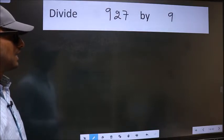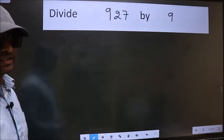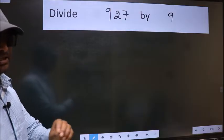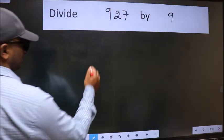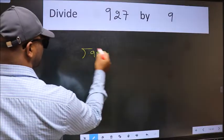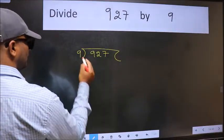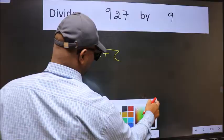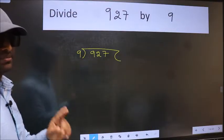Divide 9.27 by 9. To do this division, we should frame it in this way. 9.27 here and 9 here. This is your step 1.